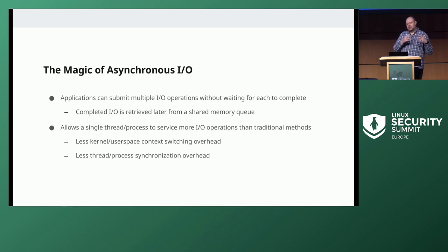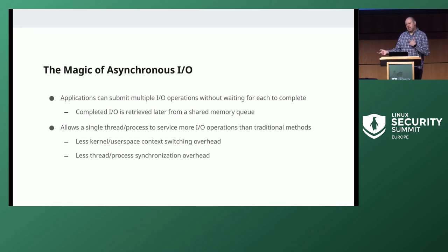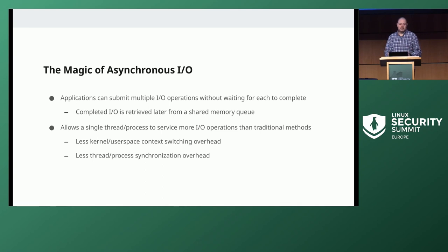This is nice because traditionally, if you wanted to do a lot of I/O, you'd have a pool of threads or processes to avoid blocking. The problem is, with processes you have overhead from context switching and synchronization; with threads it's a little less, but you still have synchronization issues and bouncing between user space and the kernel. Asynchronous I/O allows you to do a lot more I/O with a lot less resources and overhead.